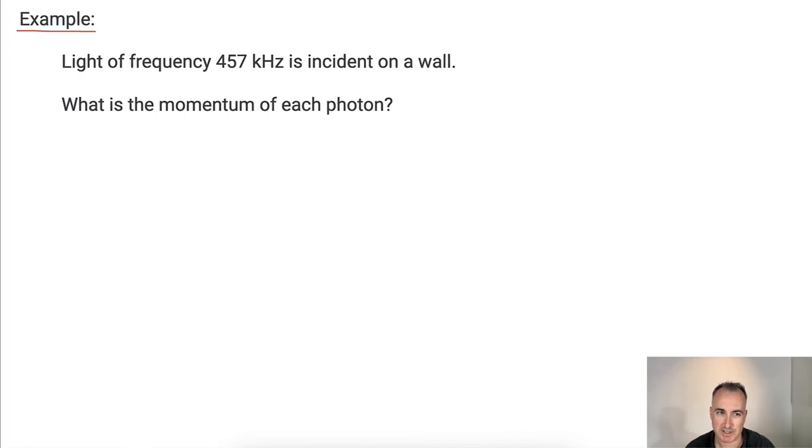So what does this mean? We can do some examples. So let's just take a look at this. Let's see if we can solve some things. So we have light of frequency 457 kilohertz incident on a wall. What's the momentum of each photon? So how do we find the momentum? Well, normally we would think that P equals MV, right? But light has no mass, so we can't use that. So we need the other version, which is lambda equals H over P. Now let's just solve for P.